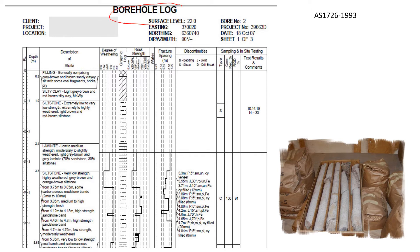Let's look at this borehole log. This is a real one. You will see that here the first two meters have no information provided, and when we look at the description we'll see that it's mostly soil — filling clay and weathered siltstone. This is soil material, so you're not going to see any data on degree of weathering, rock strength, fracture spacing, and so on.